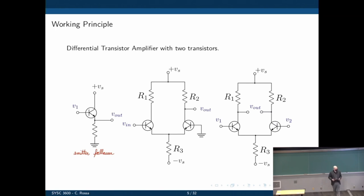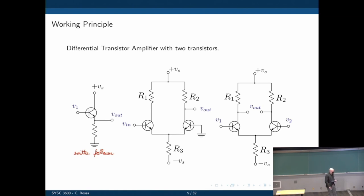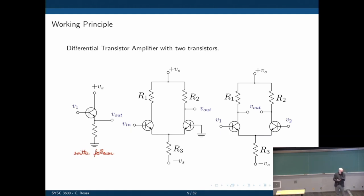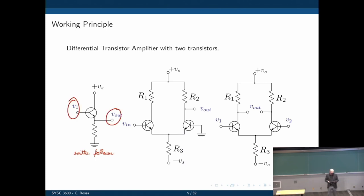There are three things we need to know - three steps to understand how they operate. Let's start with the most simple one. On the left we have what you call an emitter follower configuration. There is a transistor in this arrangement with a resistor. The transistor is connected to a power supply Vs, connected to the resistor, and the resistor is connected to ground. The output voltage and the input to this circuit are shown.